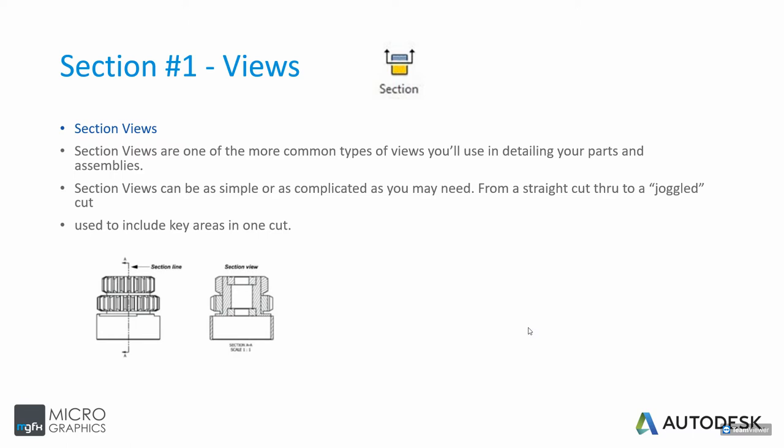Staying on views — with section views you can dissect your part and choose which point of view you're looking from. You create a section line, such as section AA, and detail it by dragging the cutout view to the opposite end in line with your drawing. Section views can be as simple or as complicated as you need — you're not limited to one straight line. You can do a zigzag line or a line at an angle. Let's jump to Inventor now and demonstrate that.